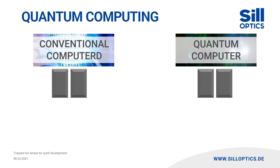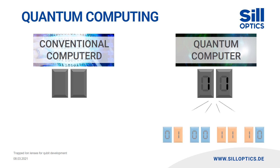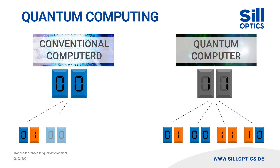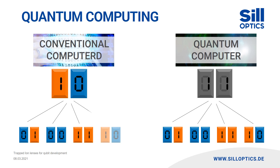Due to this property, quantum computers can determine all possible results of a calculation simultaneously. A filter has to pick out the best result afterwards. On the other hand, in conventional computers, all results have to be determined one after the other.